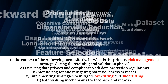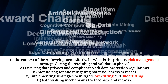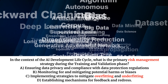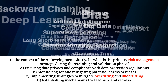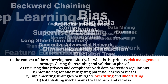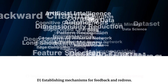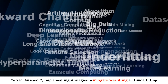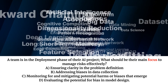In the context of the AI development lifecycle, what is the primary risk management strategy during the training and validation phase? A. Ensuring data privacy and compliance with data protection regulations. B. Monitoring for and mitigating potential harms or biases. C. Implementing strategies to mitigate overfitting and underfitting. D. Establishing mechanisms for feedback and redress. Correct answer: C. Implementing strategies to mitigate overfitting and underfitting.